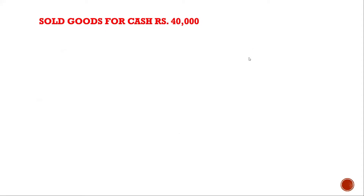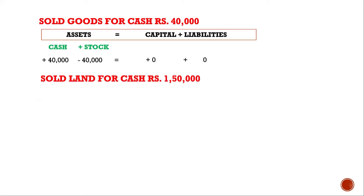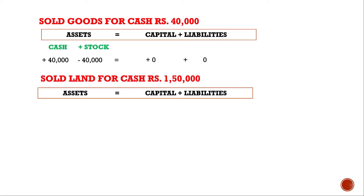Next case: sold goods for cash. When goods are being sold for cash, cash will rise by 40,000 whereas stock will fall by rupees 40,000 without affecting capital and liability. Similarly, when land is sold for cash, cash will rise by rupees 1,50,000 whereas land will fall by rupees 1,50,000 without affecting capital and liabilities.